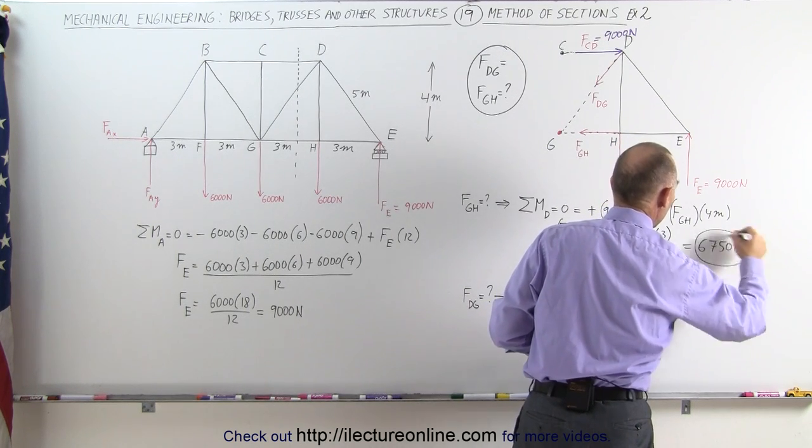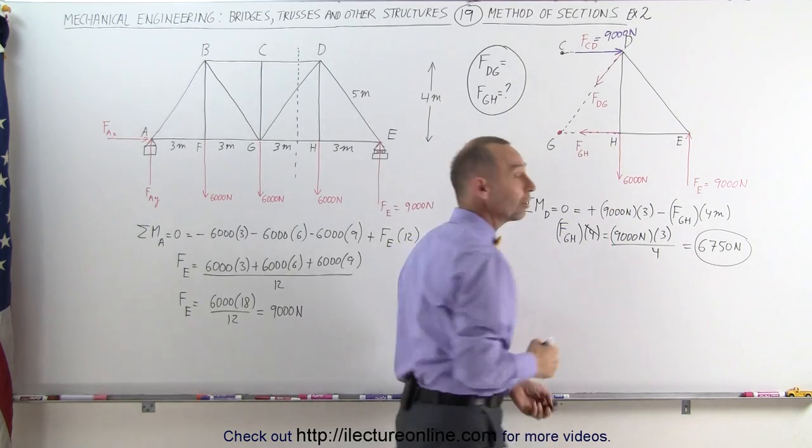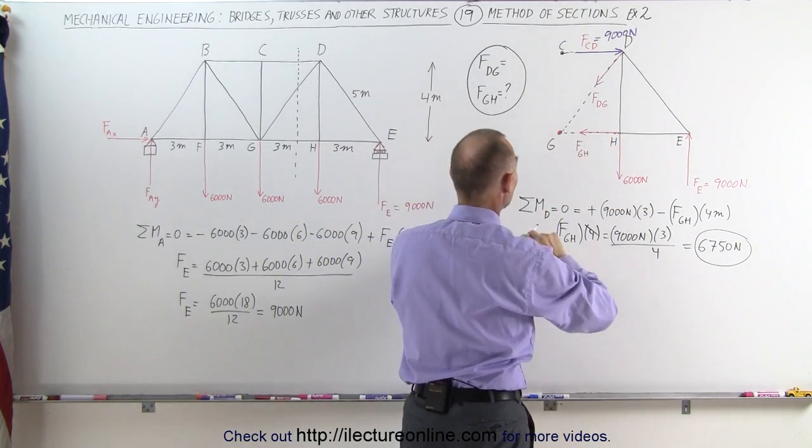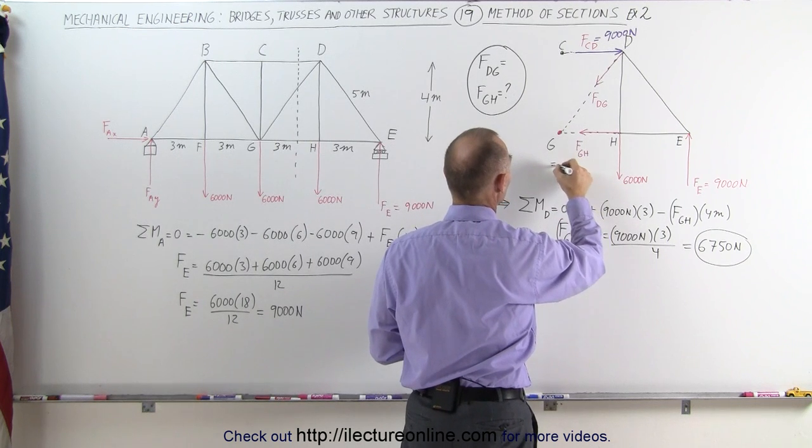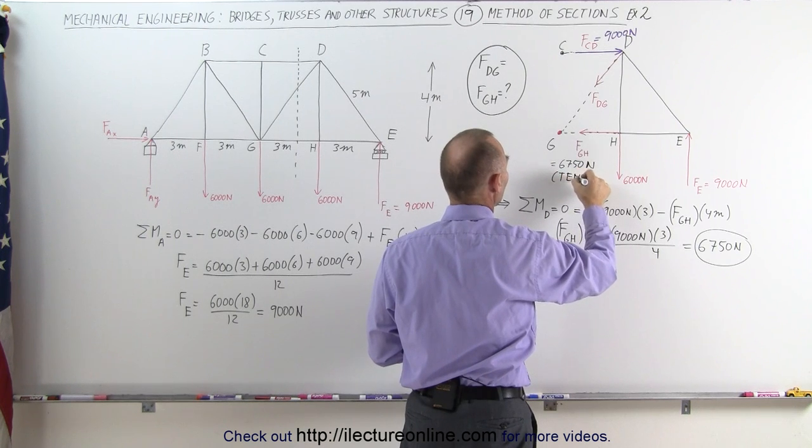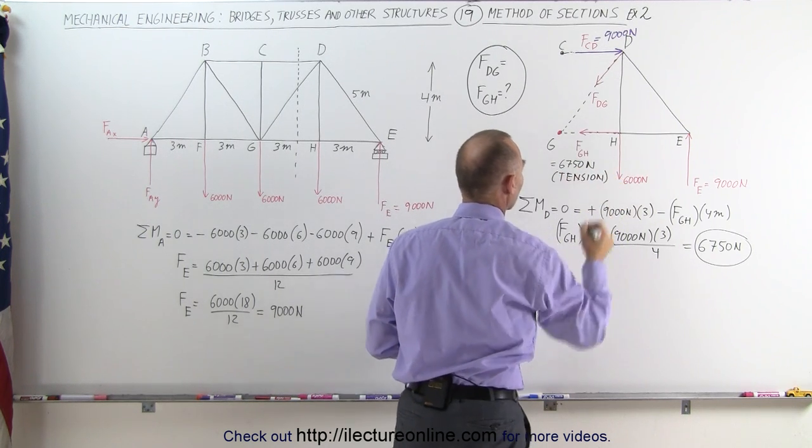6,750 Newtons. Now notice I got a positive answer, which means I drew the direction of the force correctly. That means the member from G to H is under tension. So this is equal to 6,750 Newtons, and the beam is under tension. We drew that in the correct direction.